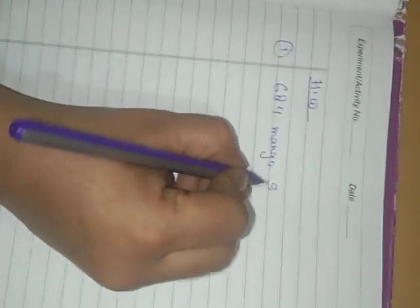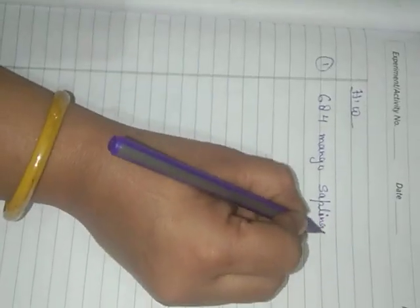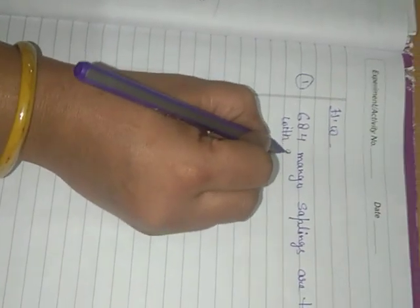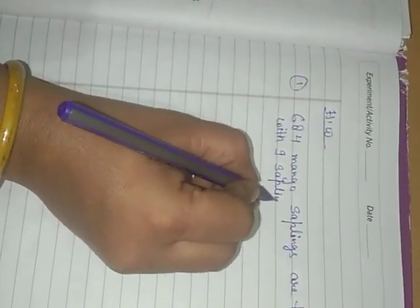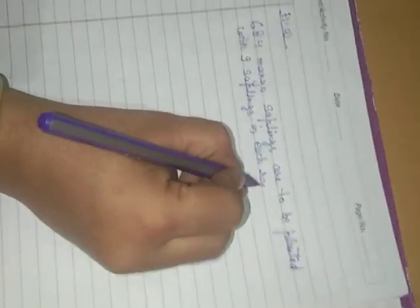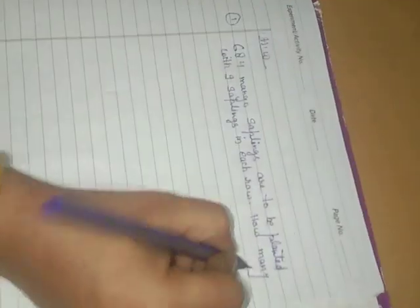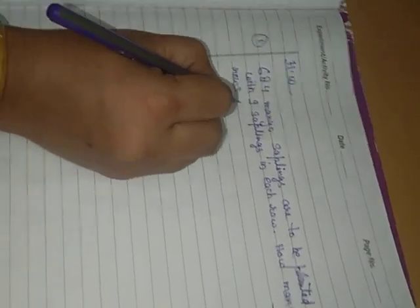Now this is your homework. 648 saplings are to be planted with 9 saplings in each row. How many rows would be planted?